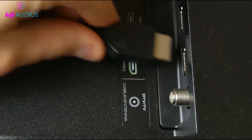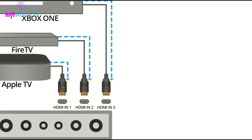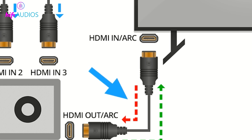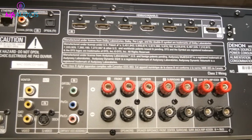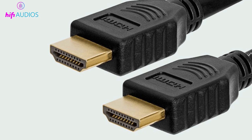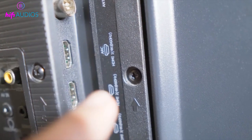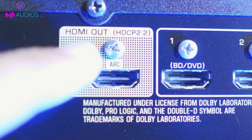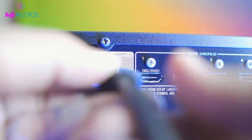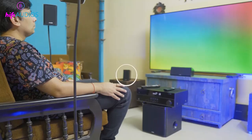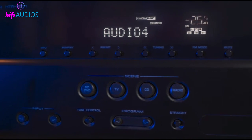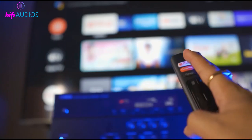If you've ever had to deal with the frustration of connecting multiple devices to your TV, you'll know how important it is to have a reliable way to transmit audio and video signals. In this video, we'll take a look at two technologies that can help you do just that. HDMI ARC is a feature that allows you to use a single HDMI cable to send audio and video from your TV to a soundbar or AV receiver. eARC, on the other hand, is an enhanced version of ARC that allows for higher quality audio-video transmission, including support for Dolby Atmos and other advanced audio formats. It also allows for faster transmission speeds and improved control of audio devices.